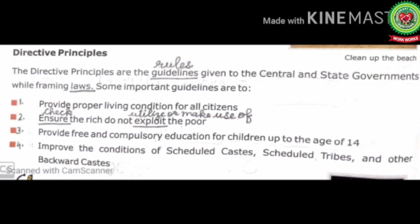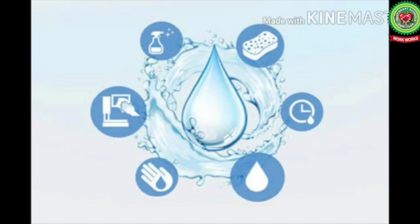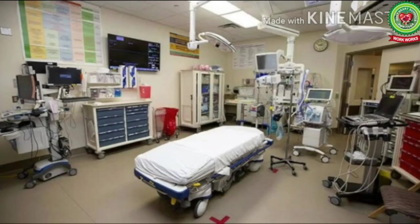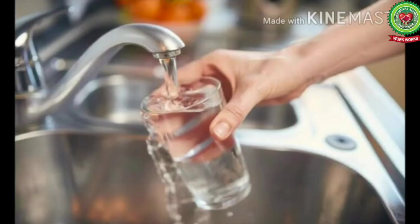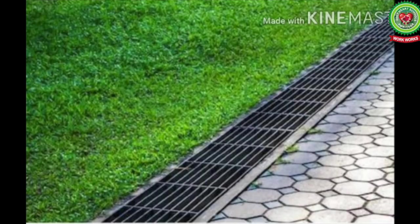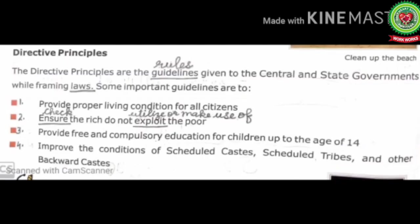Some important guidelines are: Number one — provide proper living conditions for all citizens. The government should understand the basic needs of the people and must provide proper hygienic conditions, medical facilities, proper drinking water, electricity, and a proper drainage system.